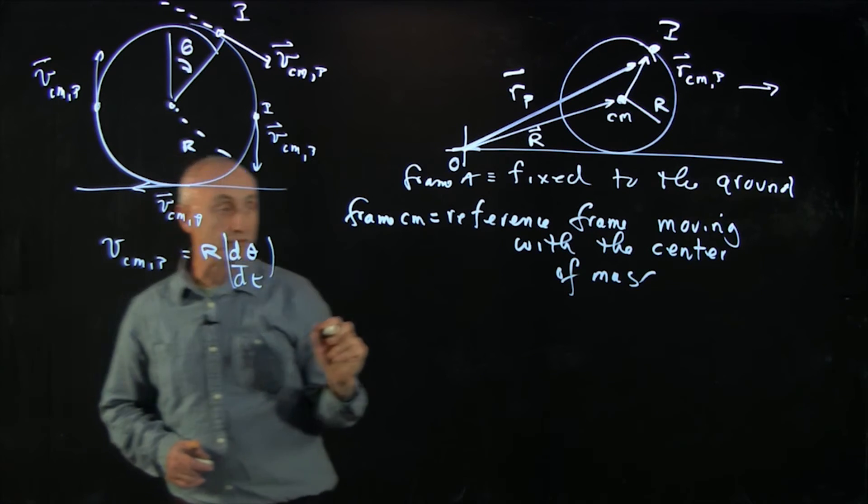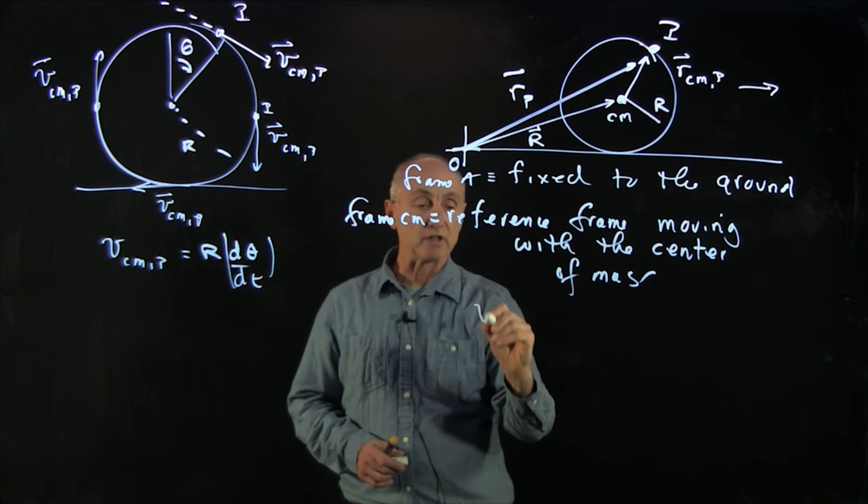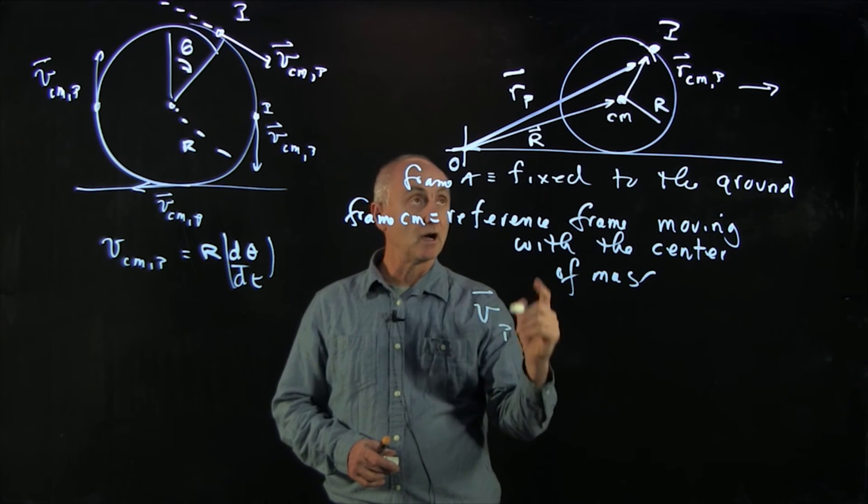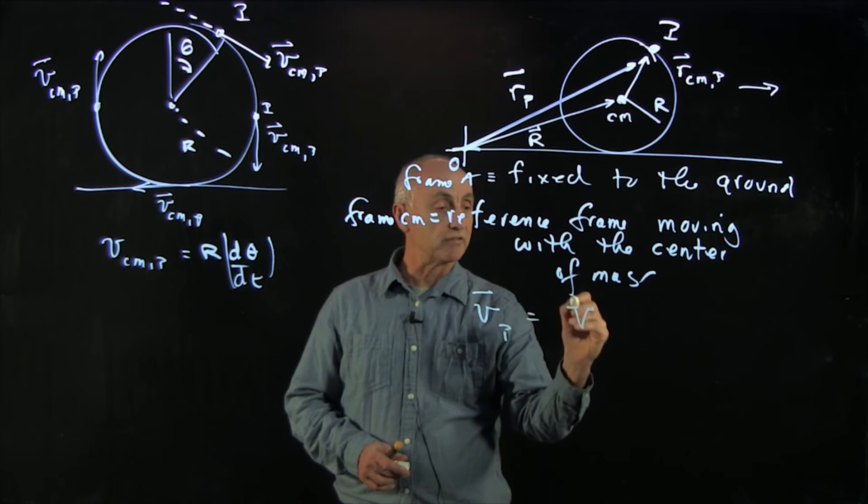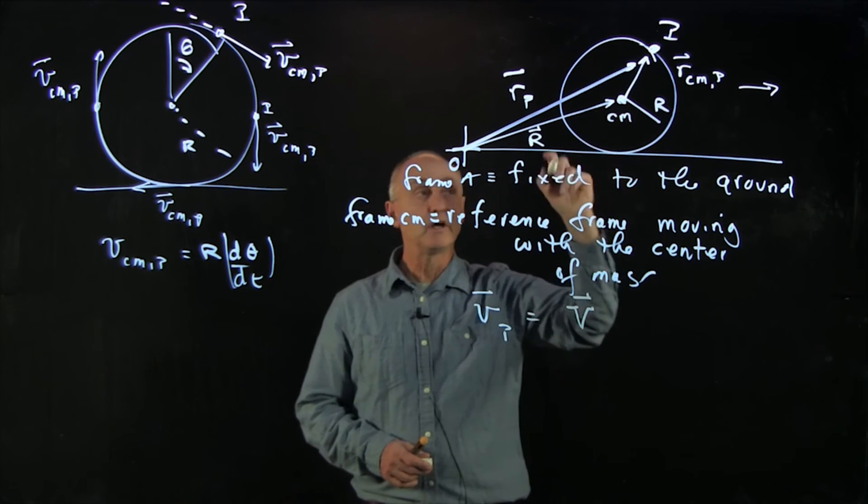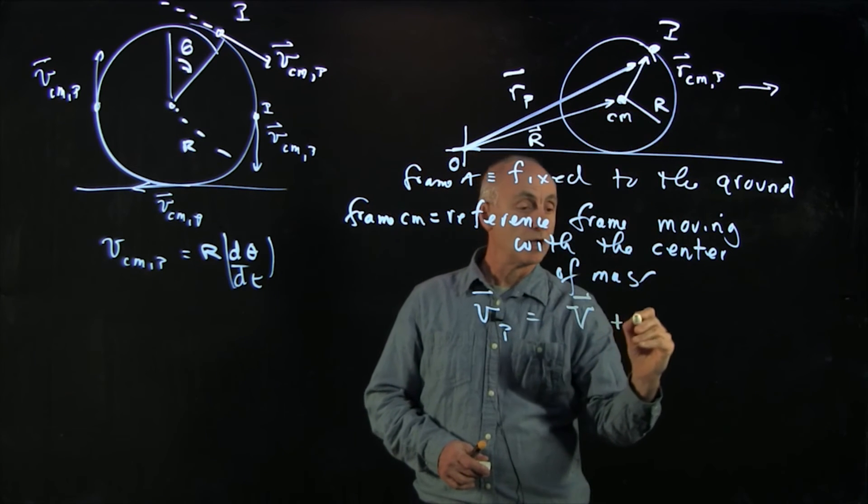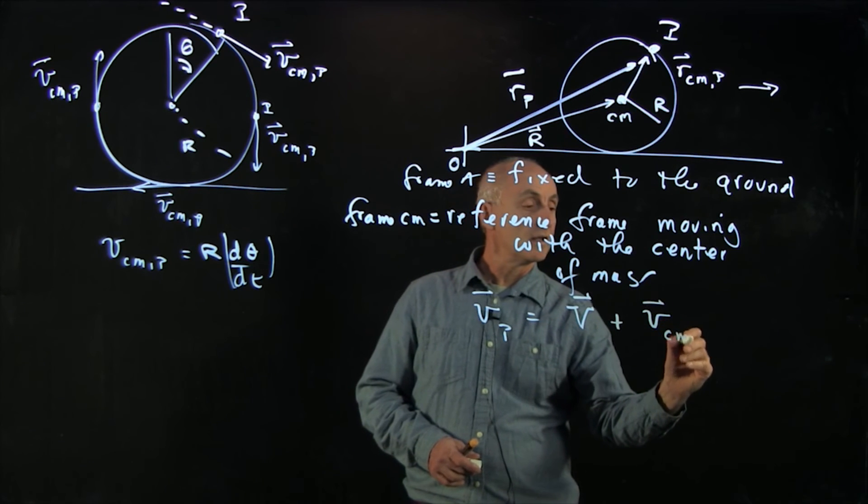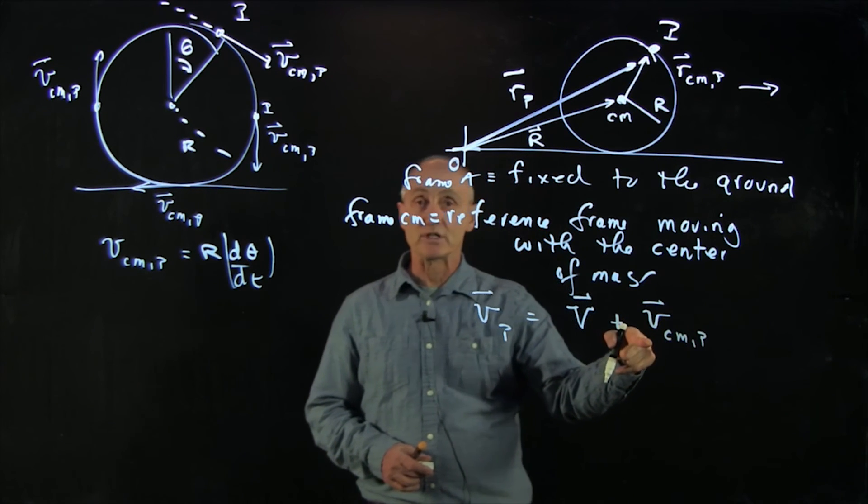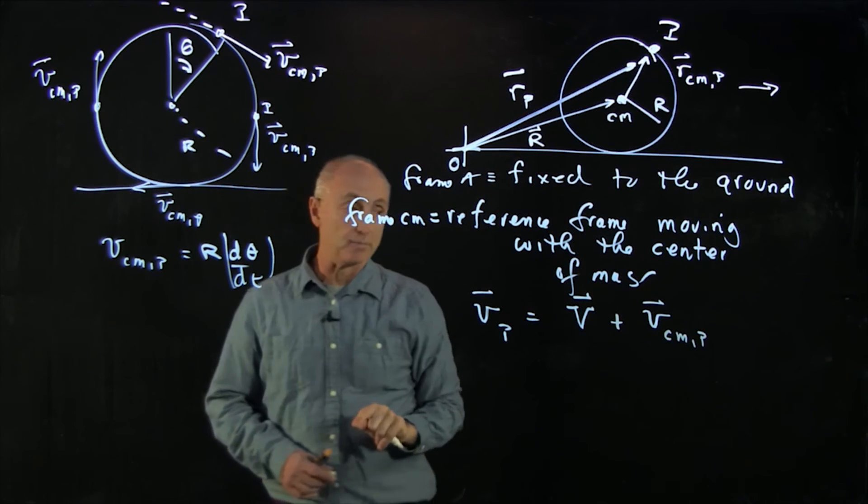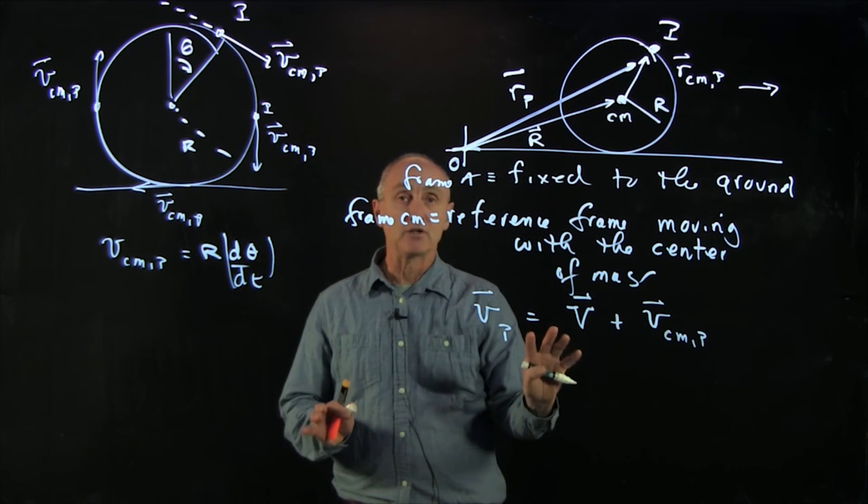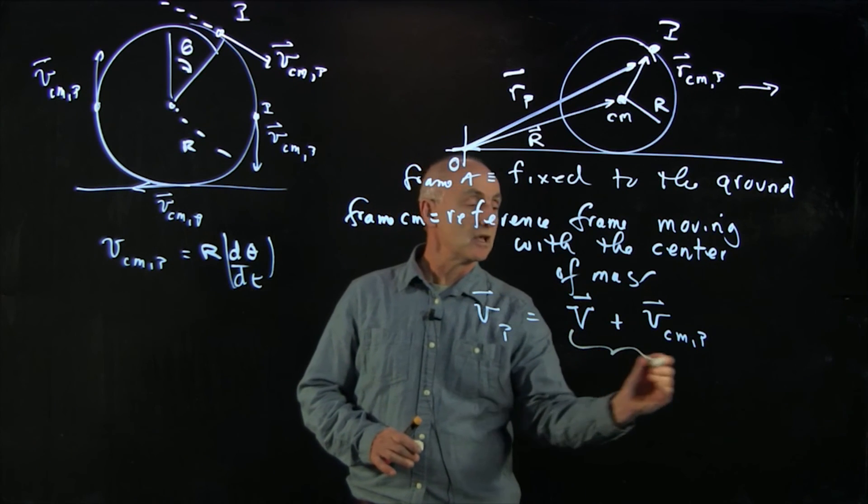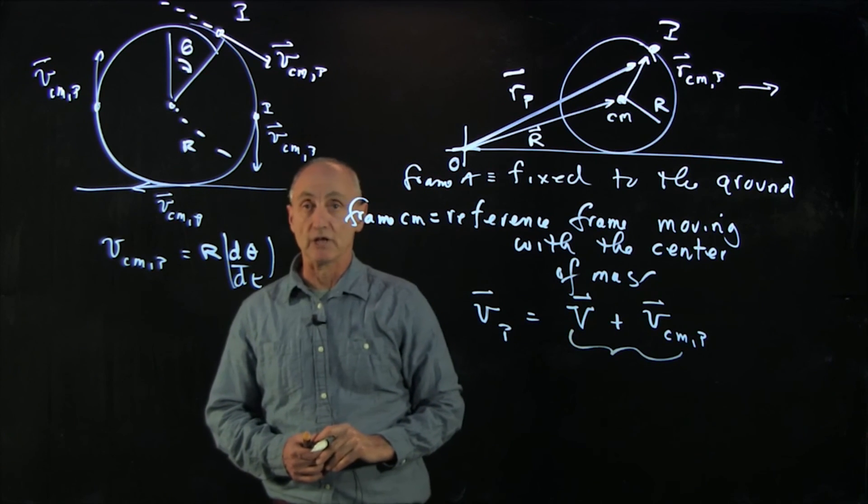Now we know the law of addition of velocities tells us that the velocity in the frame fixed to the ground of that point is equal to the velocity of the center of mass plus the velocity of the object, the point on the rim, in the center of mass frame. What we want to do now is draw a picture which illustrates this law of addition of velocities.